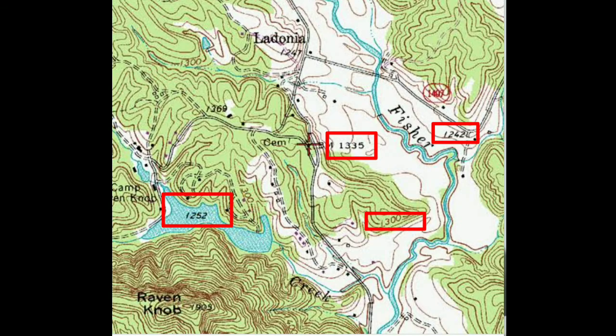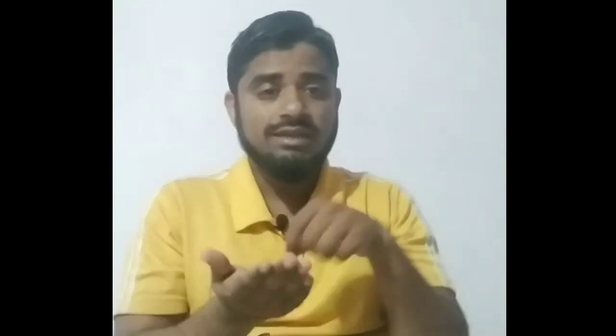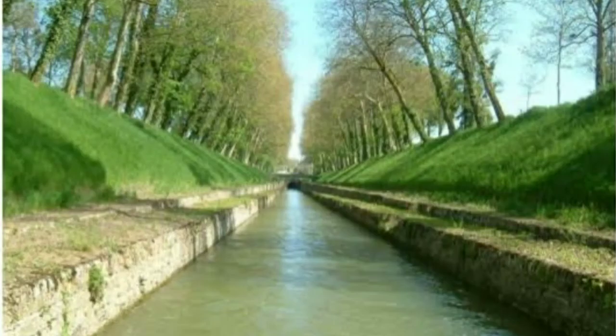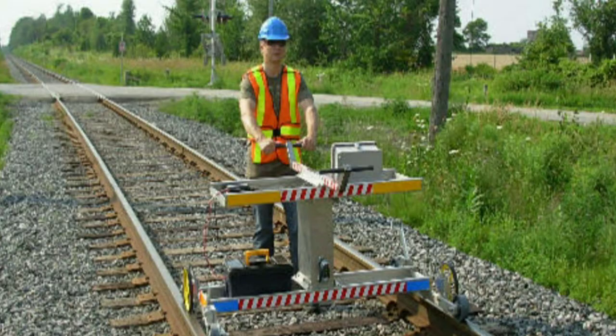Now, what is the importance of contour or contour lines? Whenever we take a topographical map which includes contour lines, it gives the elevation of particular points. With the help of a topographical or contour map, we can plan for finding a suitable site for a dam or reservoir, canal alignment, railway alignment, or road alignment.